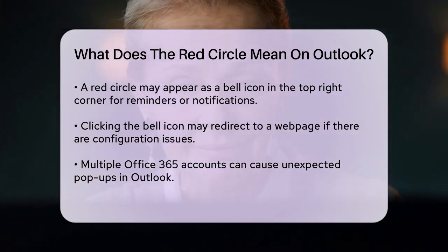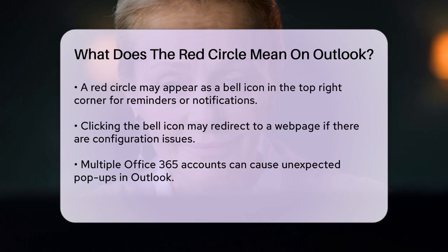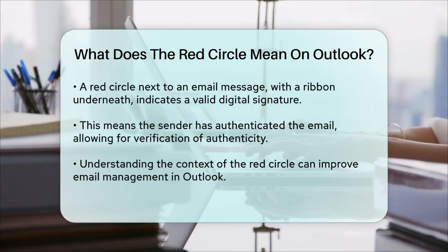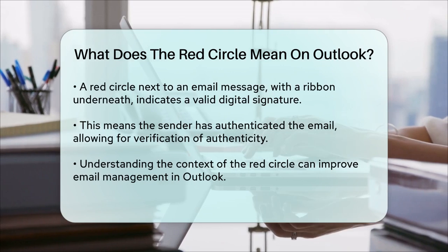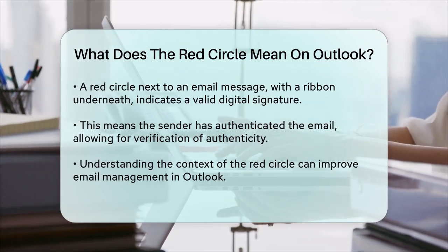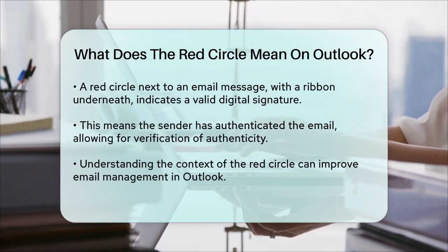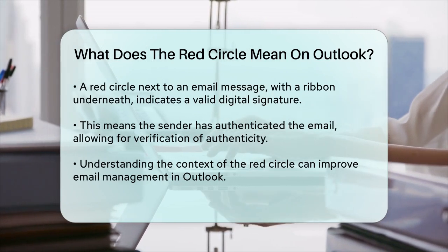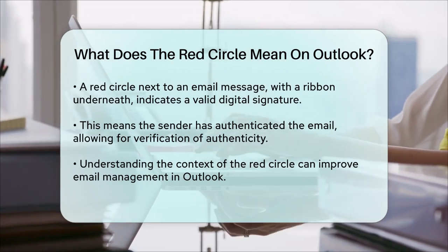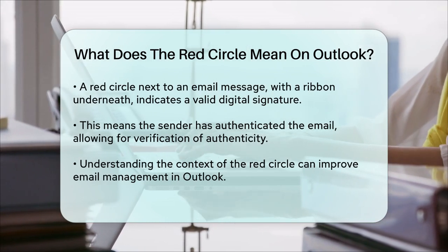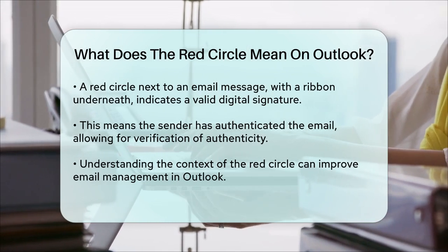In some cases, a red circle can also appear next to an email message, but this is less common. If you see an icon with a red circle and a ribbon underneath, it indicates that the message has a valid digital signature. This means the sender has authenticated the email using a digital signature, which can be verified for authenticity.